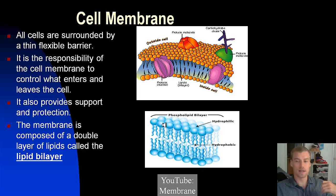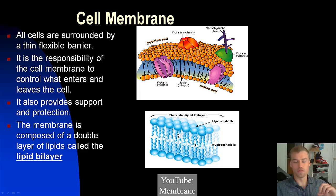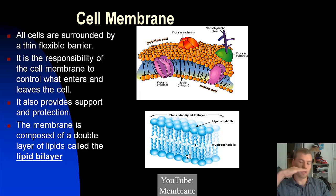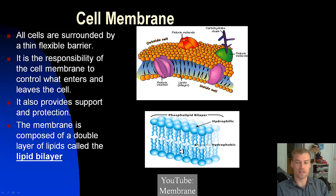What happens is that the lipid bilayer automatically arranges itself into a shape where the water-loving parts are on the outside and the water-fearing parts are on the inside. It's called the lipid bilayer because you've got two of these molecules right next to one another, and they rearrange themselves so that the part that does not like water is on the inside.